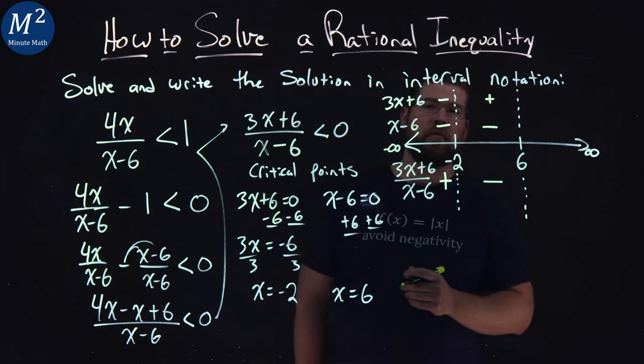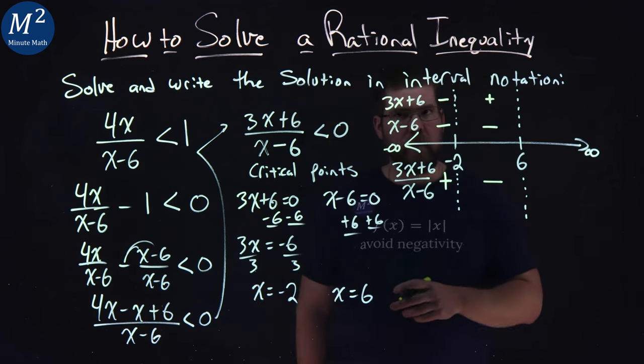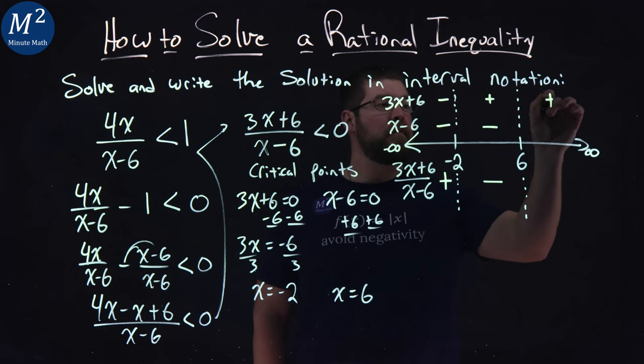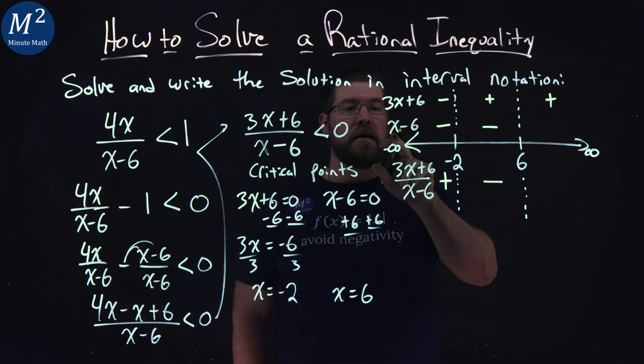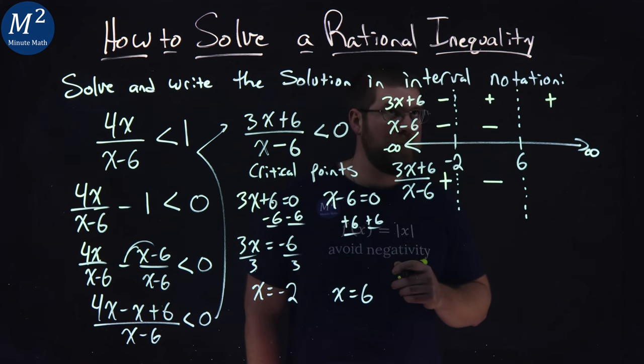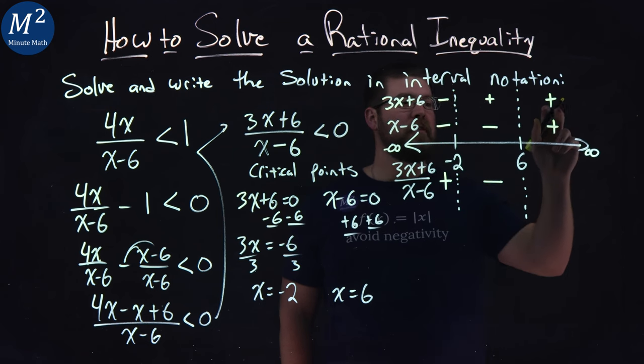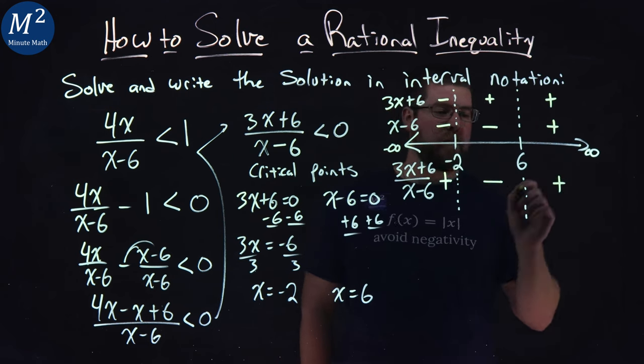Lastly, we have 6 to positive infinity. Let's pick positive 10. 3 times 10 is 30, plus 6 is 36, positive. 10 minus 6 is 4, a positive 4. And a positive divided by a positive is a positive.